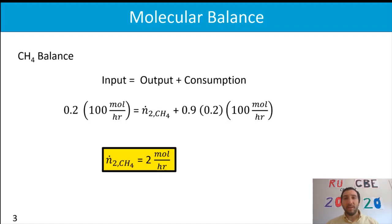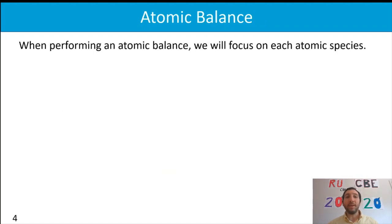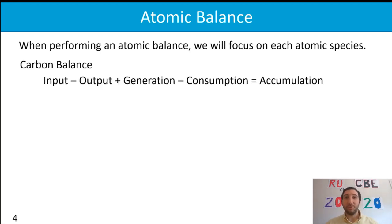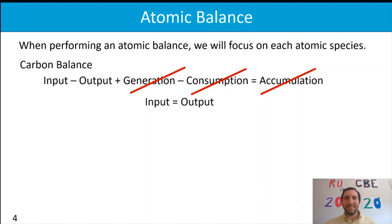Now that we know the methane flow rate, we can start our atomic balance. When performing an atomic balance, we focus just on each atomic species — for our system that's carbon, hydrogen, and oxygen. We use the general material balance equation, and since we're at steady state there's no accumulation. And because we're doing an atomic balance rather than a molecular balance, we also have no generation or consumption, so the balance simplifies to: input equals output.